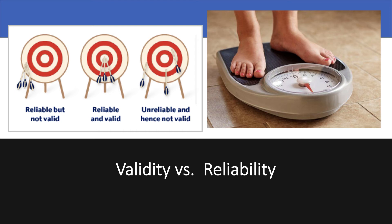A prime example of something being consistent but not valid is a scale. Every day people stand on their scale to take their body mass. But if you stand on your scale at the doctor's office versus the one at your parents' house versus your own, you might get completely different numbers — inaccurate to your actual weight. A scale always gives you a number, so it's always consistent and reliable, but it might not be valid or accurate to what your actual body mass is.